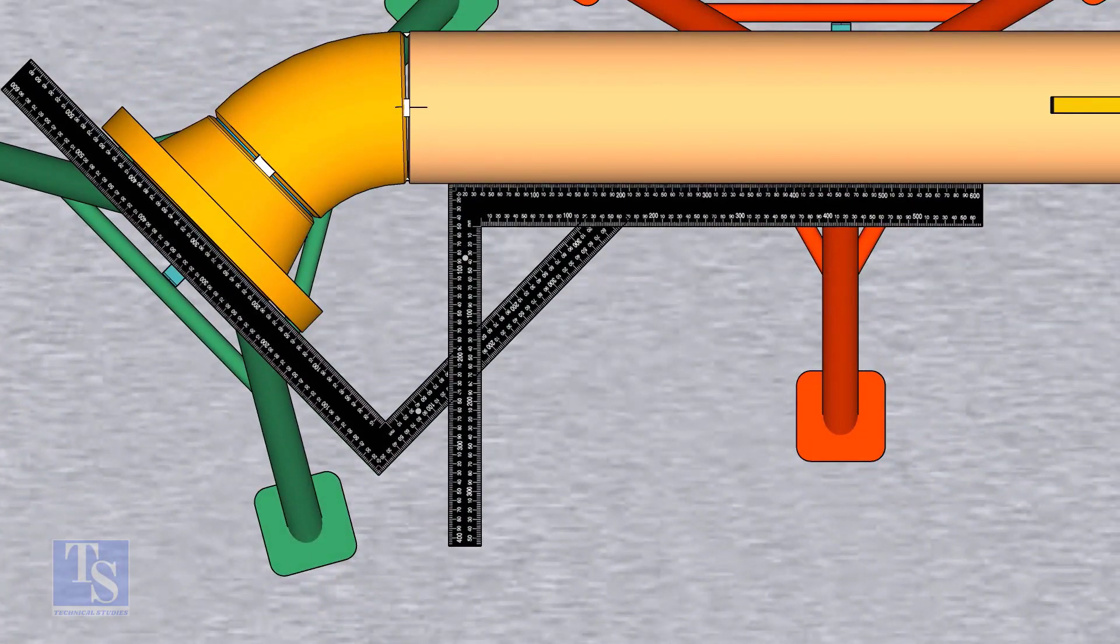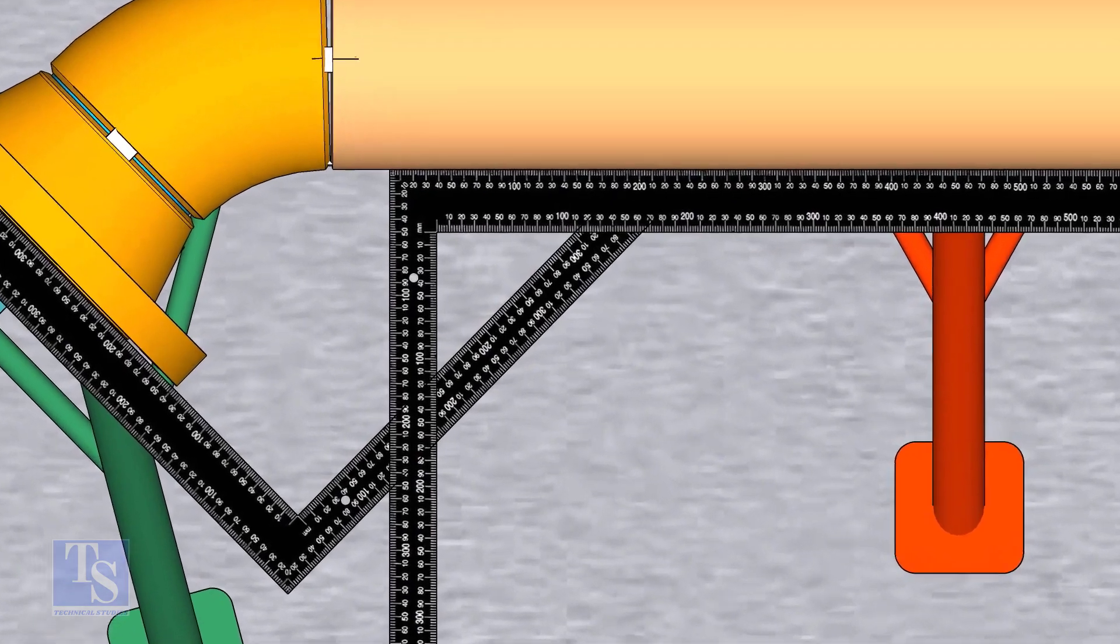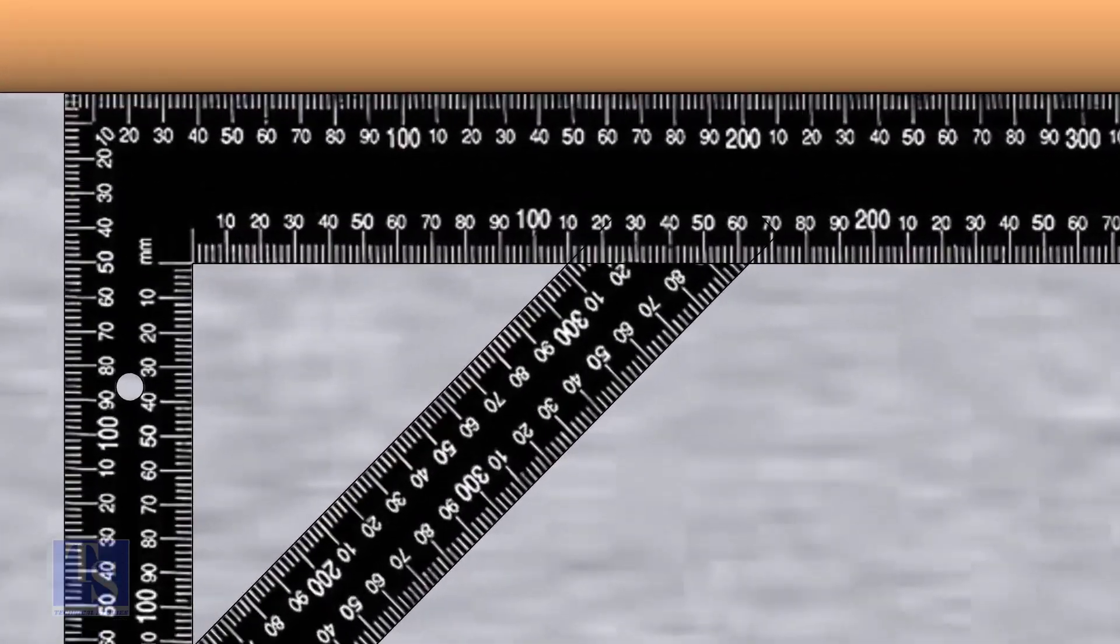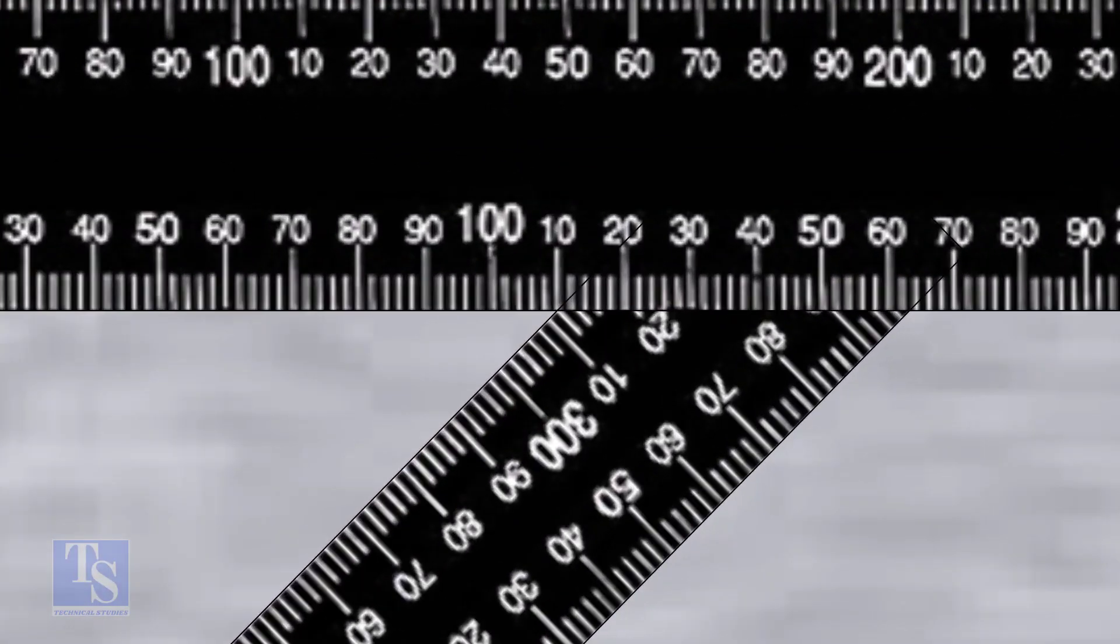Check the degree of the flange face to the pipe. Tack weld on both sides of the joint.